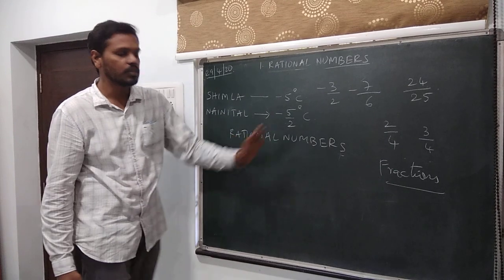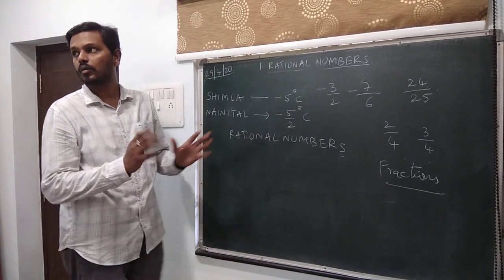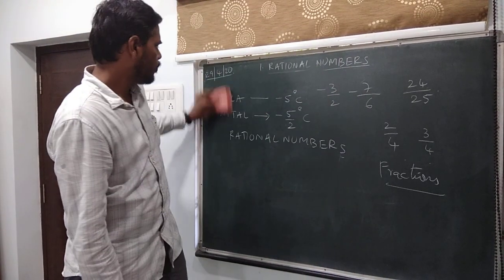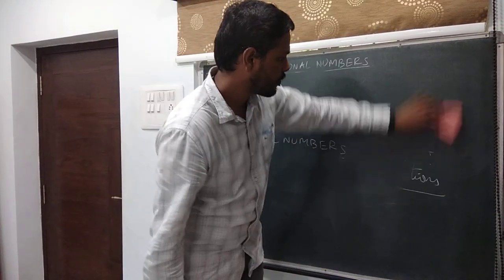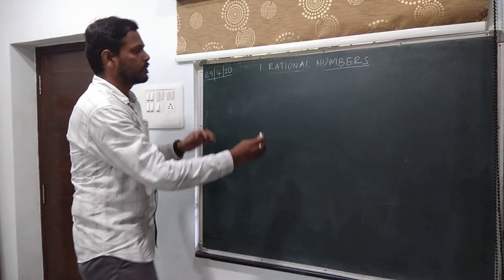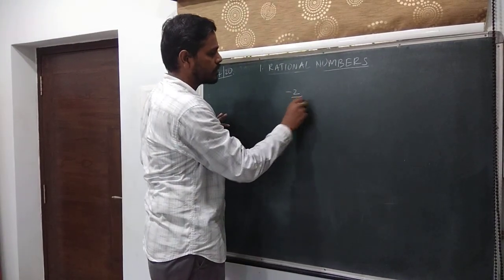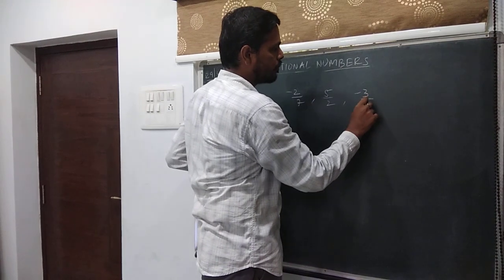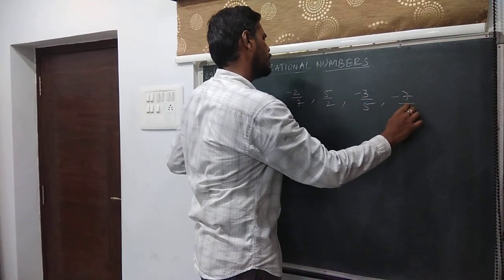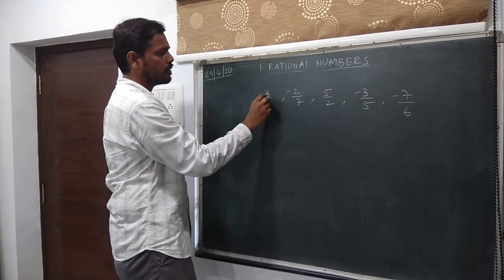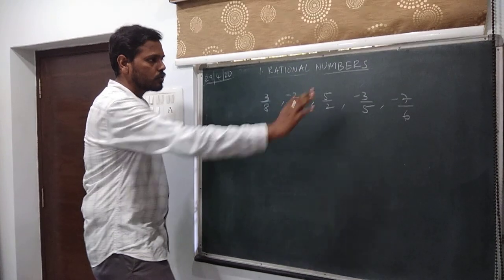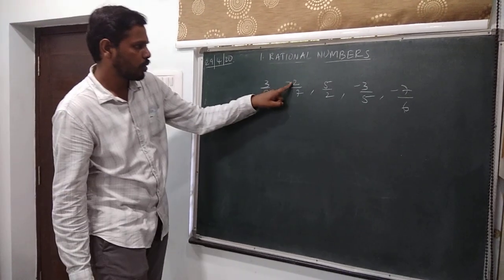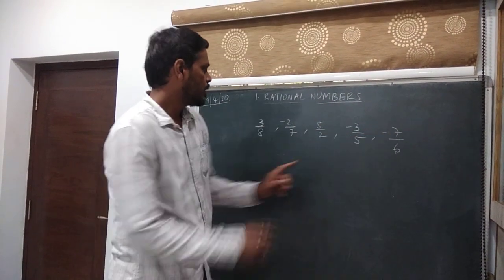Now we try to come across a general form for all these rational numbers — a form which fits all the numbers. The collection includes numbers like 2 by 7, minus 2 by 7, 5 by 2, minus 3 by 5, minus 7 by 6, 3 by 9, 8, and so on. Now if we examine these rational numbers closely, all the top parts — the numerators — are all integers.